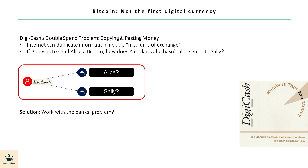With DigiCash, it was possible for Bob to send the digital currency to Alice and Sally simultaneously. This is the double spend problem — Bob copies and pastes money into both Alice and Sally's accounts, thereby defrauding DigiCash. Chaum's solution was to work with banks, which was problematic for two reasons: firstly, it was anti-cypherpunk; secondly, it did not allow for a decentralized approach, as it relied on a centralized intermediary. In other words, it took everyone back to square one.